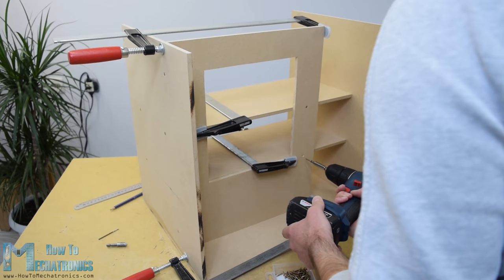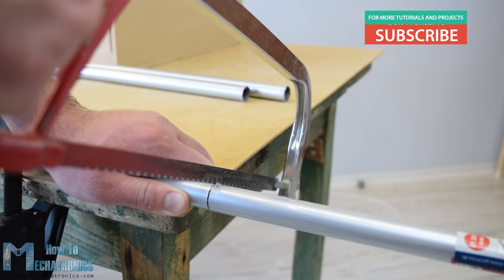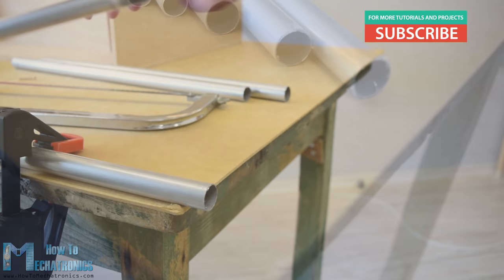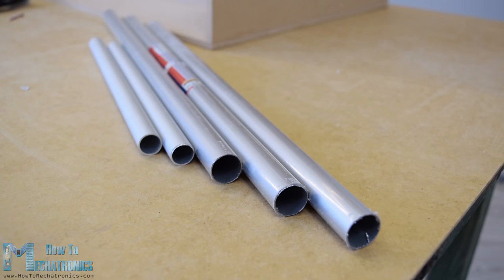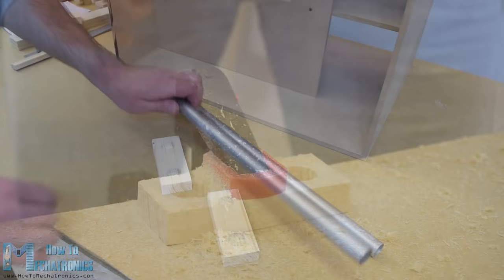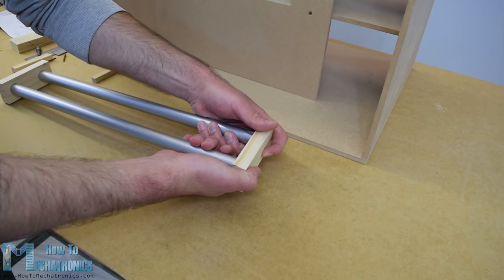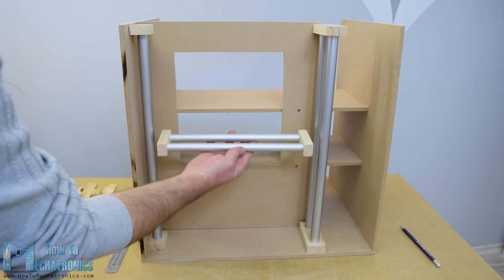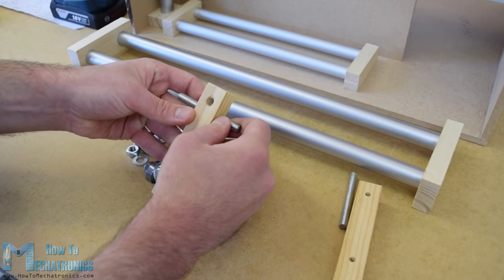At this point of the assembly I will continue with making the rail system. For that purpose I am using aluminum tubes which I cut them to size using a metal handsaw. The diameter of the tube for the horizontal rail is 16mm while for the vertical rail the diameter is 20mm. On a solid 18mm wood boards I made slots for the tubes using Forstner bead and then attached the tubes to them. The horizontal rail is made out of 27cm long tubes while the vertical rail is made out of 3 45cm long tubes.